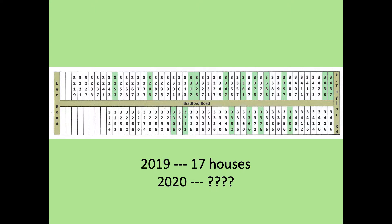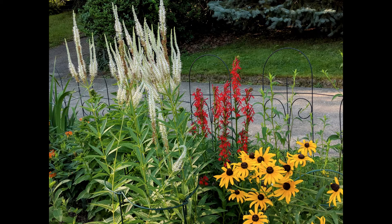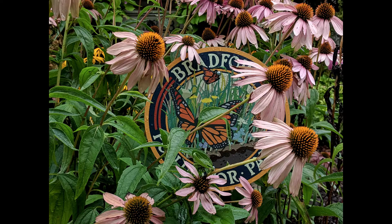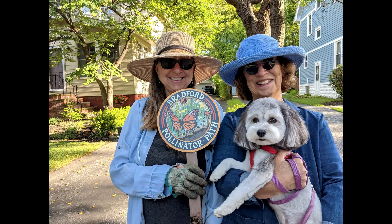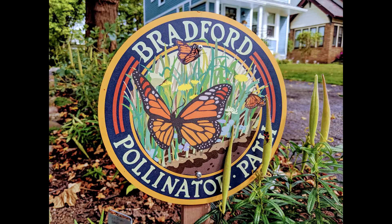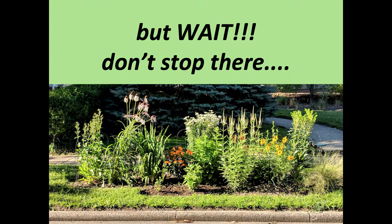Everyone is eager to mow less and feed insects and birds more. Culver's root, cardinal flowers — beloved by hummingbirds too — and black-eyed Susan. Purple coneflower. The neighbors are loving this.